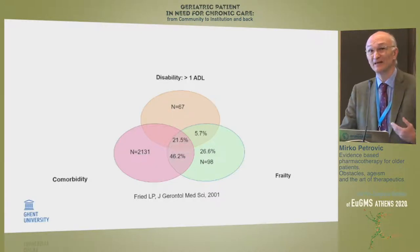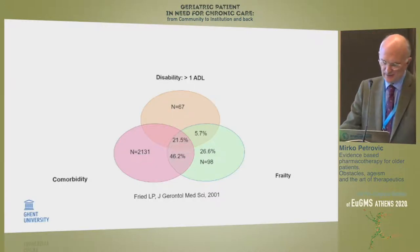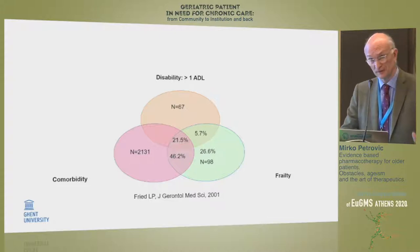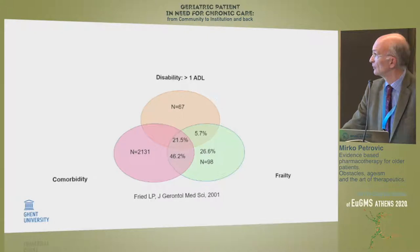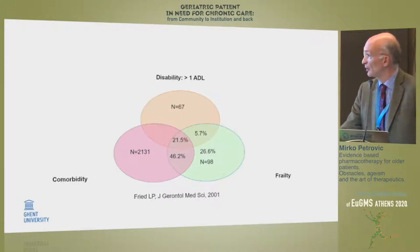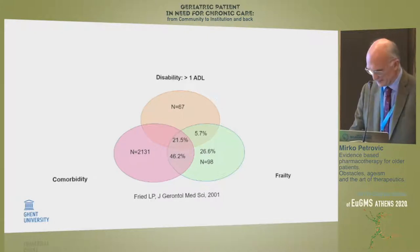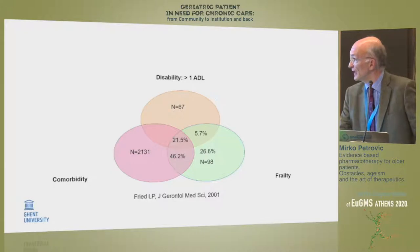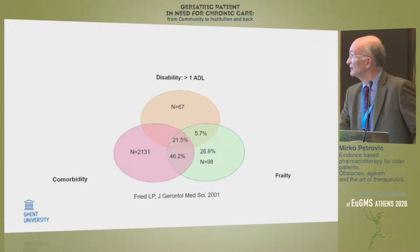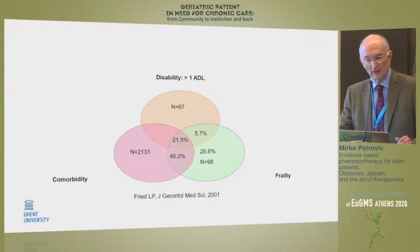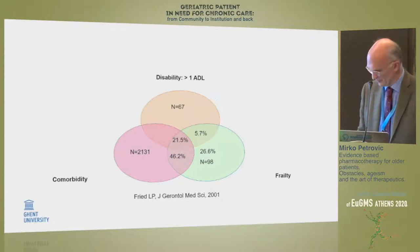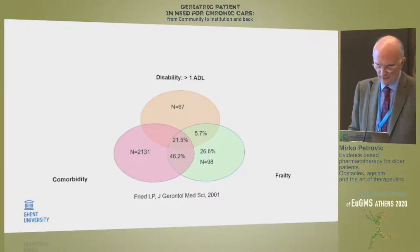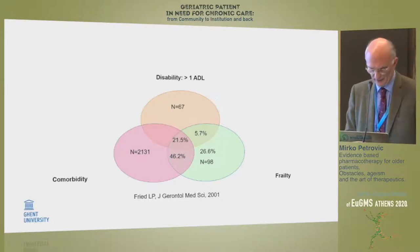With population aging, the number of people in need of geriatric expertise — those who are disabled, those who are comorbid, and those who are frail — will increase. That particular triangle here shows the overlap between these three entities: comorbidity, frailty, and disability. These people are the particular group of interest that we deal with in our daily practice.